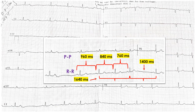This PP shortening is exactly what is happening in this ECG. Now looking at the RR intervals: taking two RR complexes where conduction is occurring, these measure 1640 milliseconds, and the pause is shorter at 1400 milliseconds. This is an important finding that I will discuss in further slides.